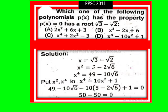in option D, that is x⁴ - 10x² + 1. So x⁴'s value is 49 - 10√6, minus 10 times x², which is 5 - 2√6